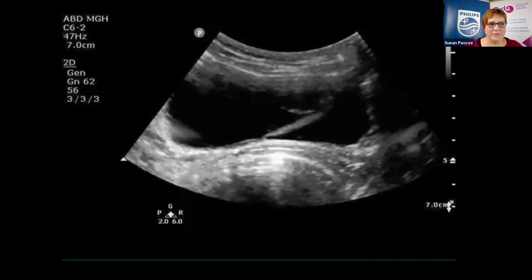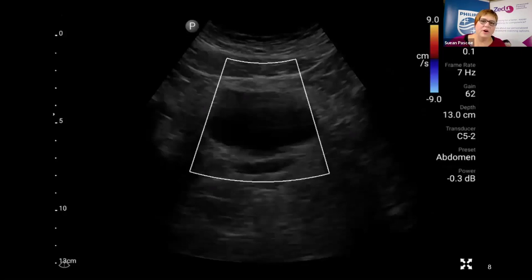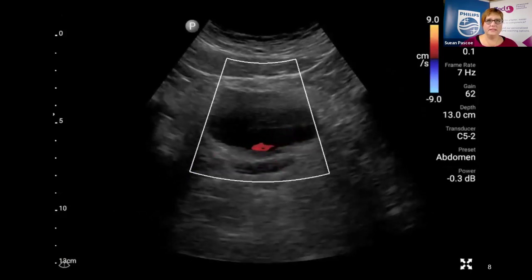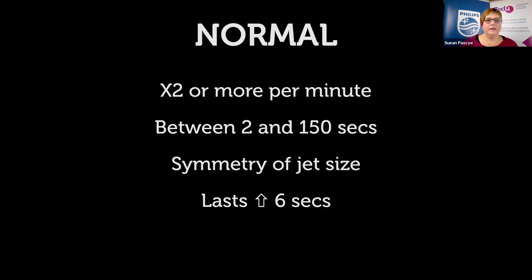On color, the jet of urine is of a high enough speed so that the frequency shift — the speed of the urine going past the ultrasound — creates a frequency shift and therefore you see a burst of color. Here again is a right-sided ureteric jet with that little burst of color. What is normal? It's thought we should see two or more jets per minute, occurring between two seconds and 150 seconds, with symmetry of jet size, and some studies suggest each jet should last longer than six seconds.